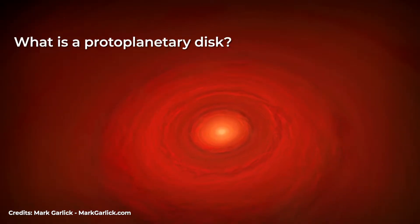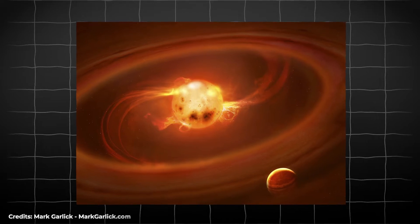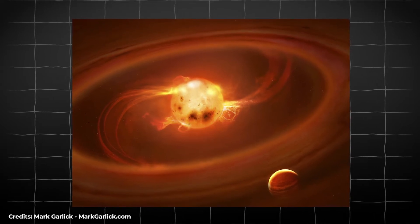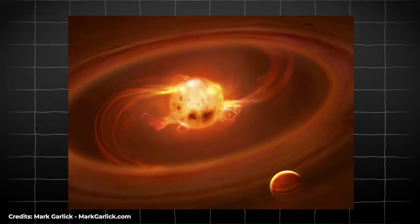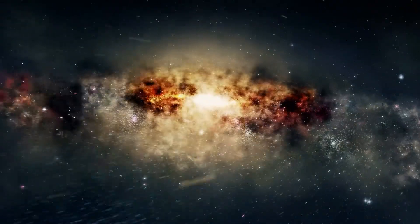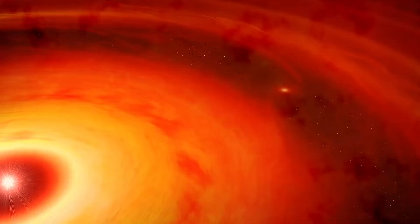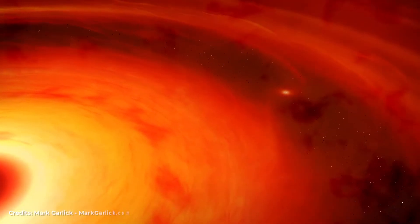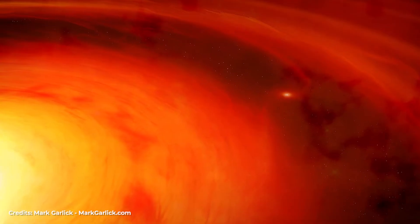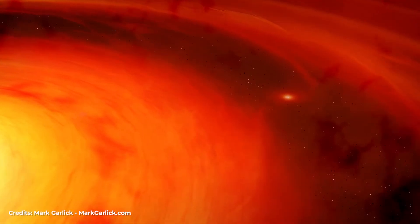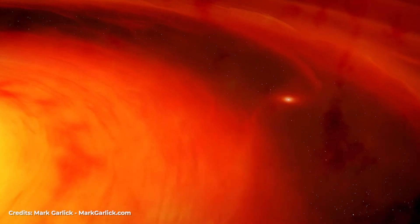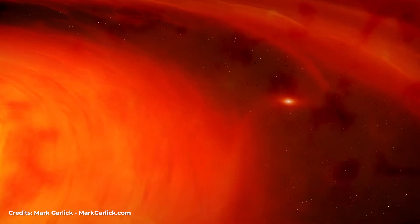The protoplanetary disk is a gas disk of various chemical elements that form around a young star. It originates from a cloud of gas and dust that gravitationally collapses due to gravity. As the cloud contracts, it begins to spin faster due to the conservation of angular momentum. This leads to the formation of a flattened disk around the star at its center.